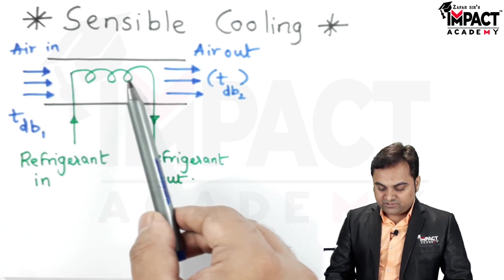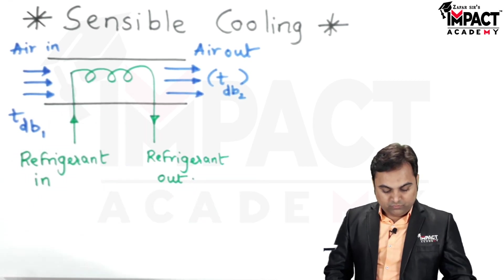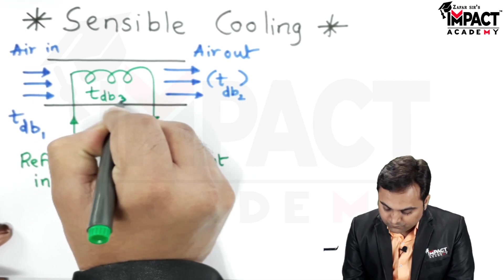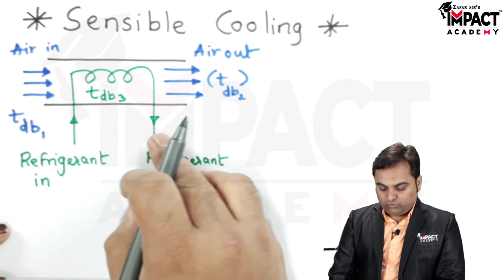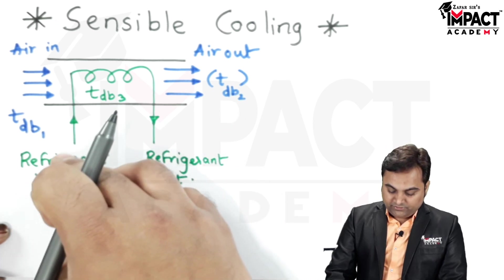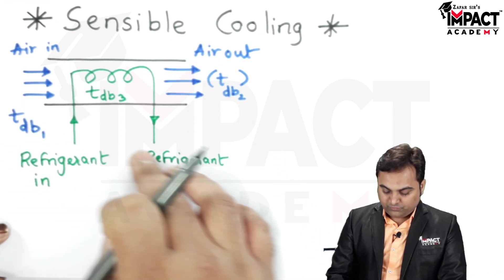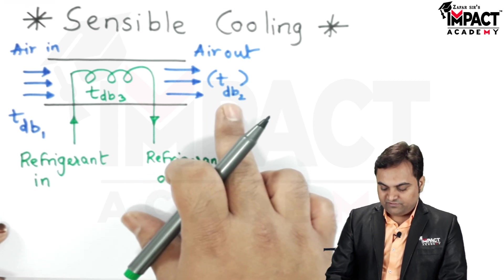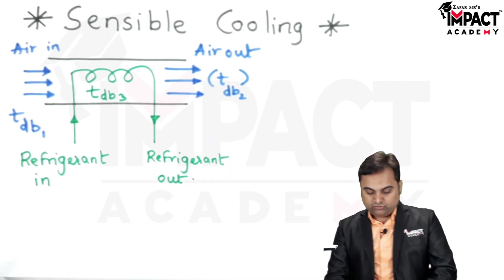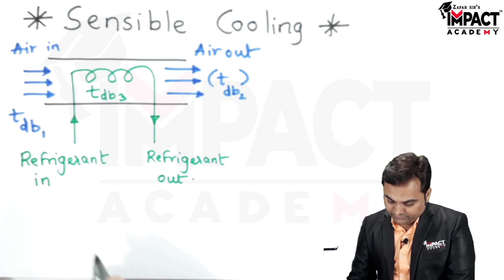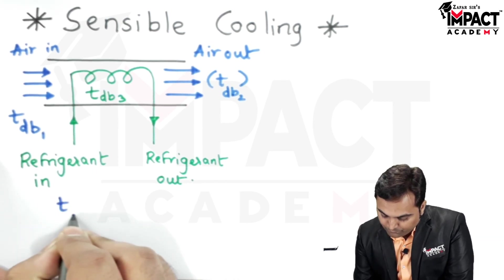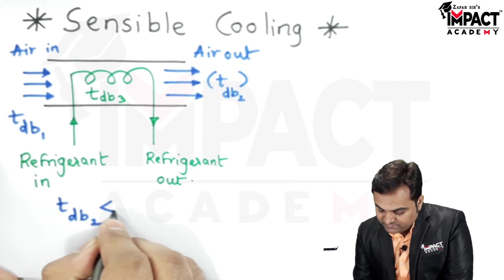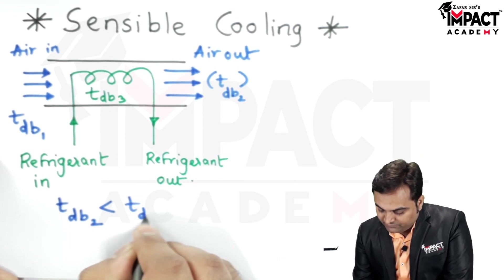And when it passes over this cooling coil which is having the dry bulb temperature as tdb3, the temperature of air will go on reducing. That is, the heat from the air would be absorbed by the refrigerant and the air will leave at a much lower temperature which is at tdb2. So here tdb2, the dry bulb temperature of the outgoing air, is less than the dry bulb temperature of incoming air.